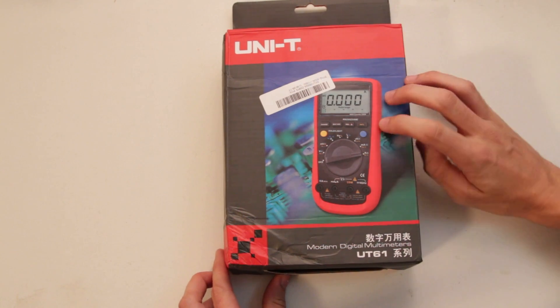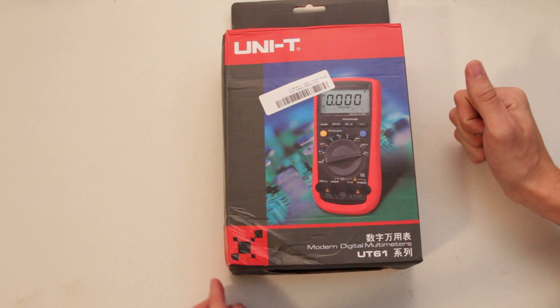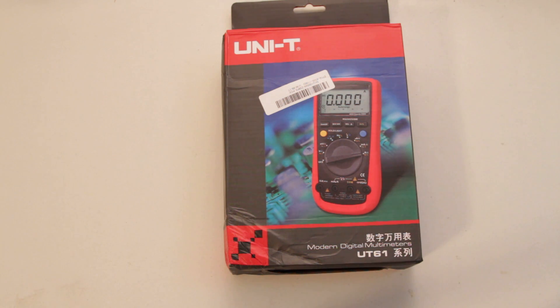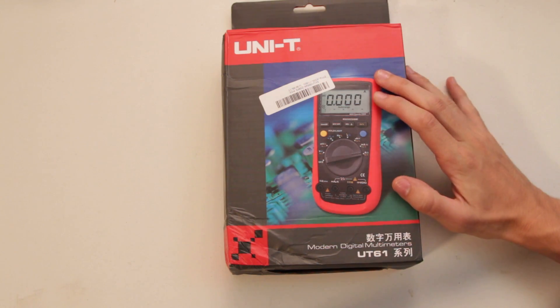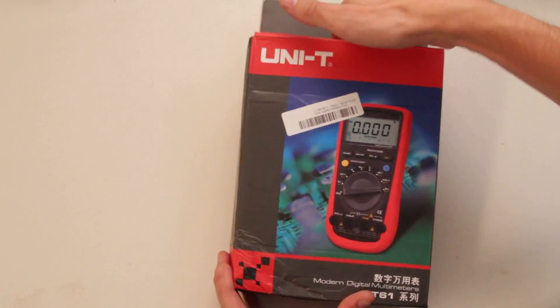Well on the net this is a 50 euro multimeter, it's auto ranging, it's supposed to have 22,000 counts and it's definitely a prosumer multimeter. So let's unbox it.